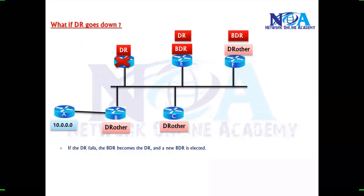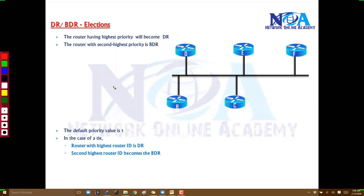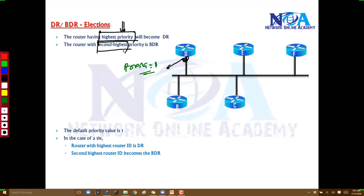The DR/BDR election is based on the priority value. Every interface has a priority value, and the default priority value is 1. Whichever device has the highest priority value becomes the DR, and the router with the second highest priority value becomes the BDR.